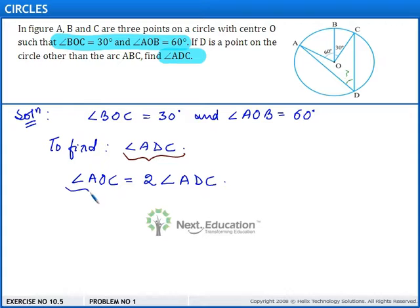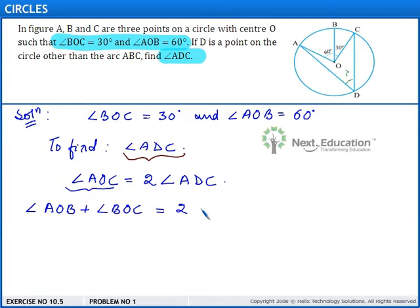And angle AOC is angle AOB plus angle BOC. So this is equal to 2 times angle ADC.